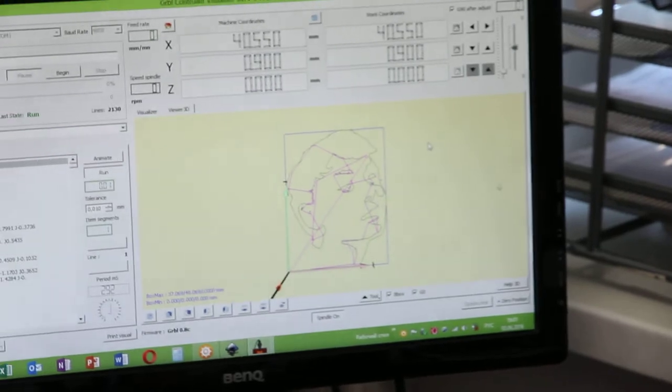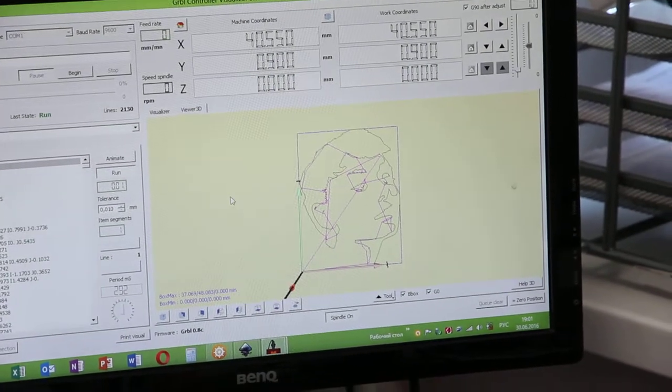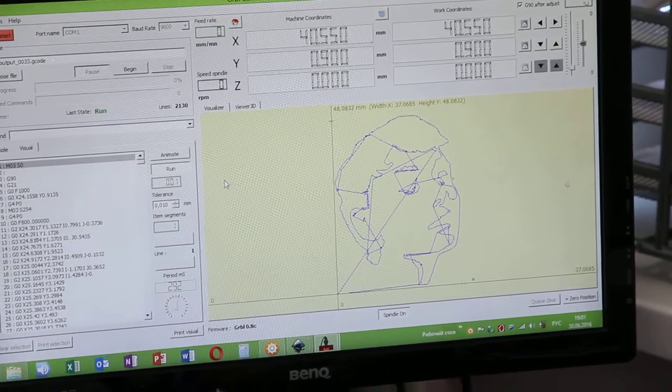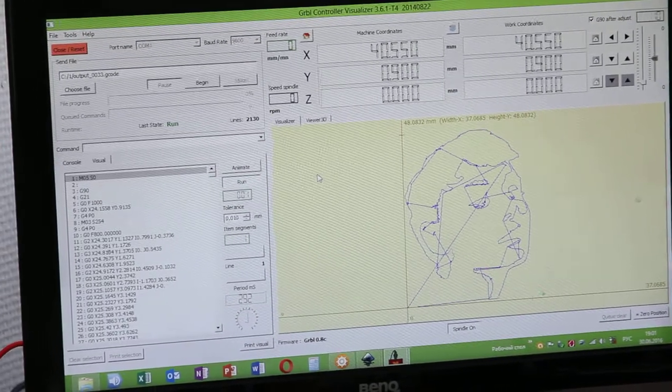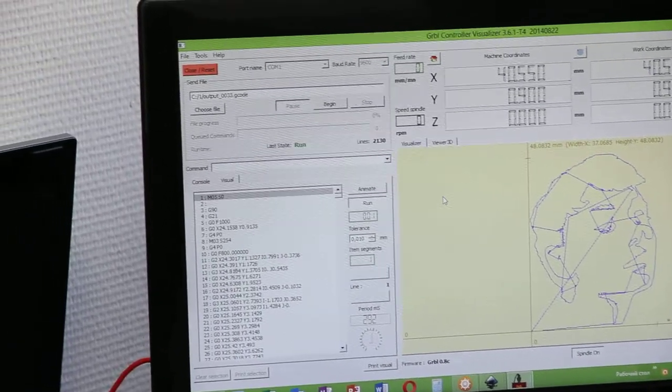You see the image, it's a woman portrait. It's already converted into G-code, and we are going to engrave it on glass with a powerful 3.5 Watt diode laser.